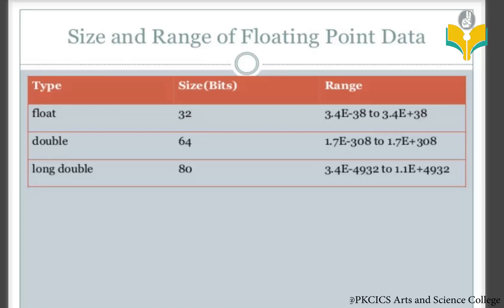Floating data types have a size of 32 bits, which means 4 bytes. For greater capacity and size, we use the double concept.